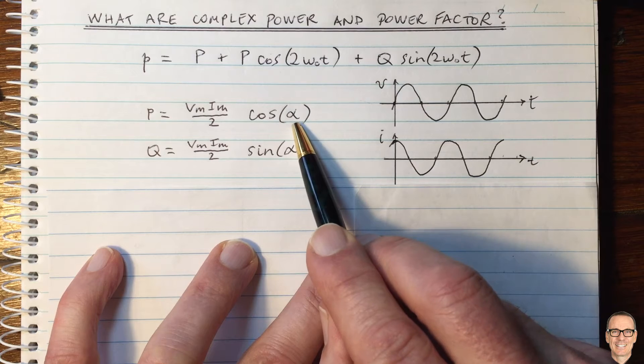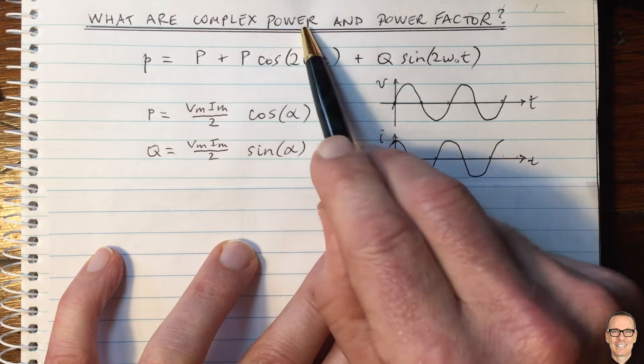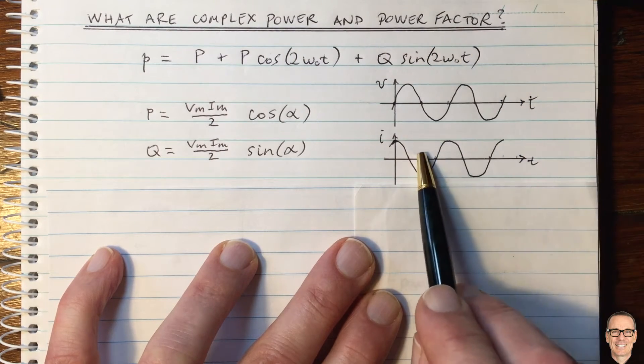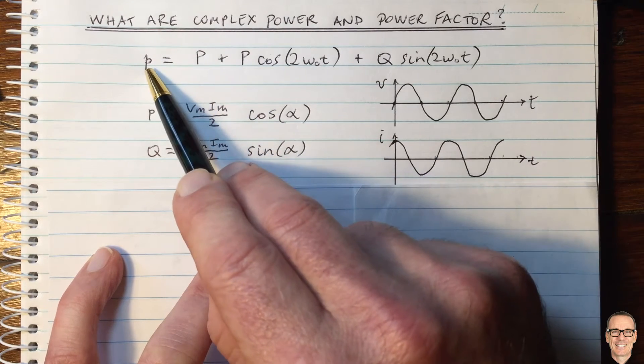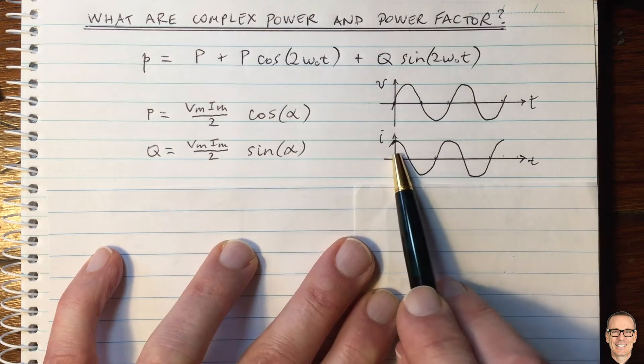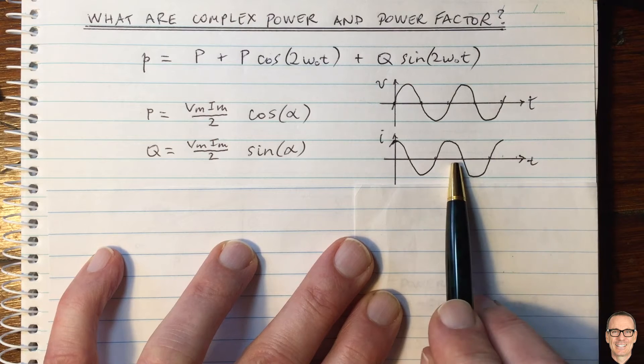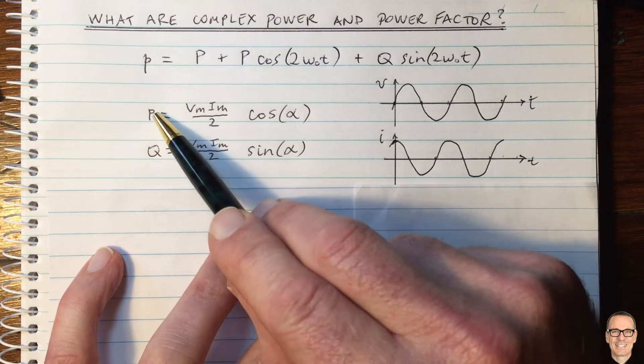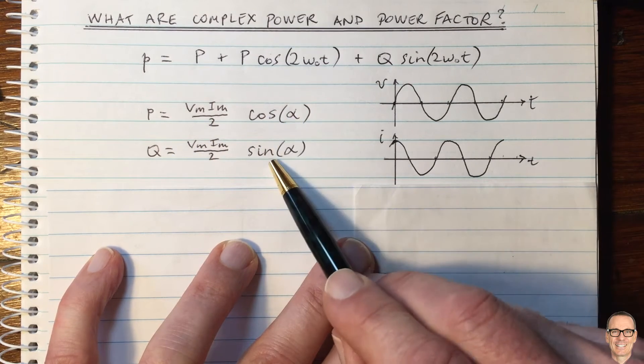That is the alpha that we're talking about. And I always think when you're thinking about complex power and power factor, don't forget about what we're really talking about, which is the instantaneous power and these waveforms. So because of this P and Q relationship with the cos and the sine,